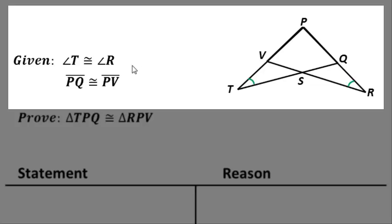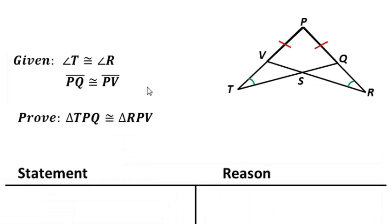Angle T is congruent to angle R, so I've marked these with the green arcs, and segment PQ is congruent to segment PV.